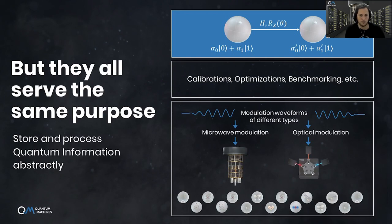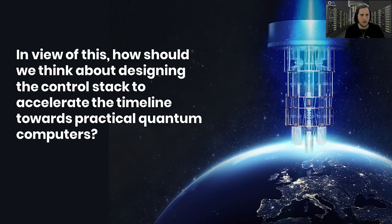Every QPU needs different controls - different types of control signals, frequencies, modulation waveforms, time constraints. But eventually all QPUs and their controls need to serve the same purpose: to store and process quantum information.